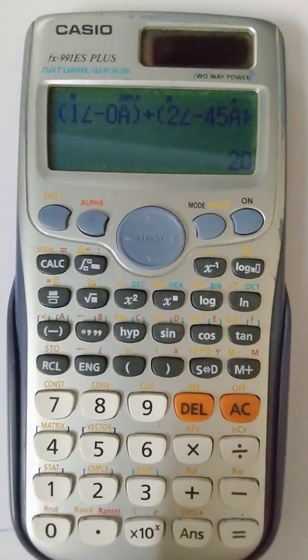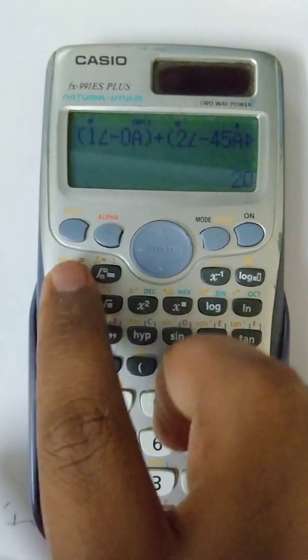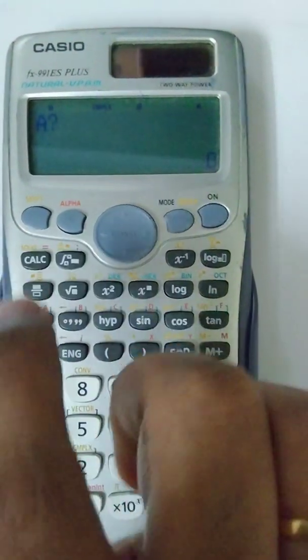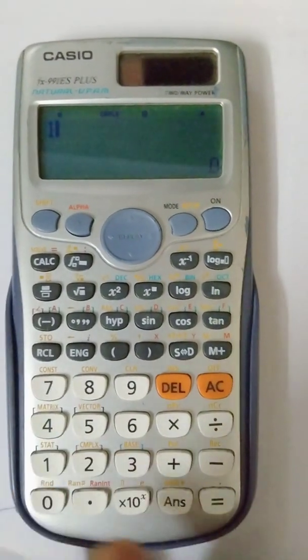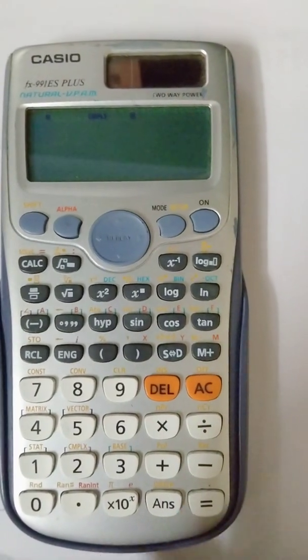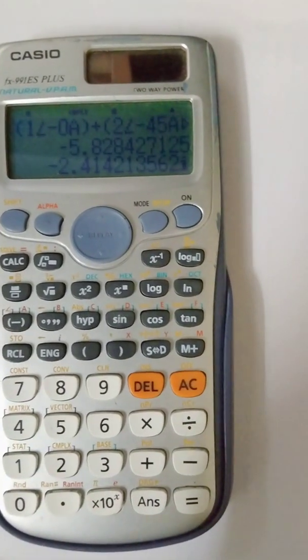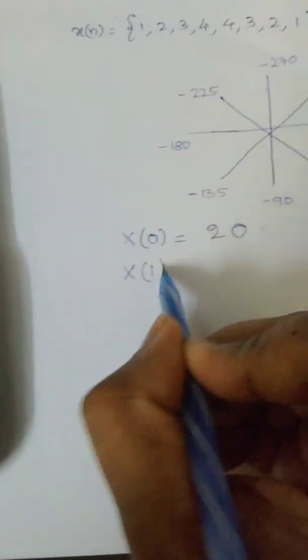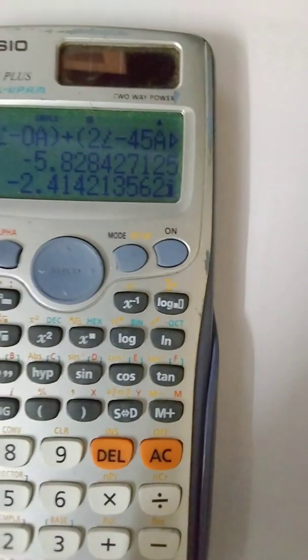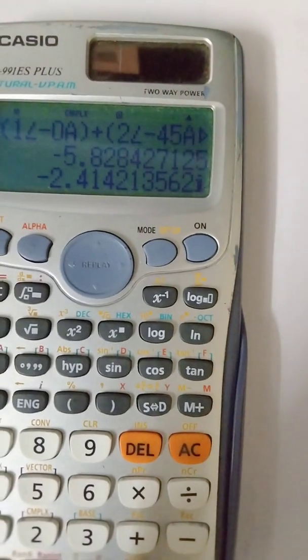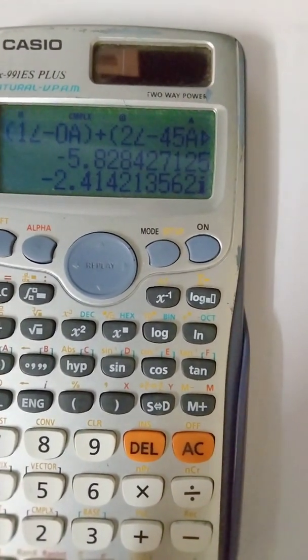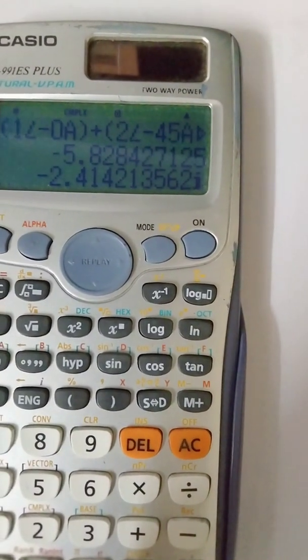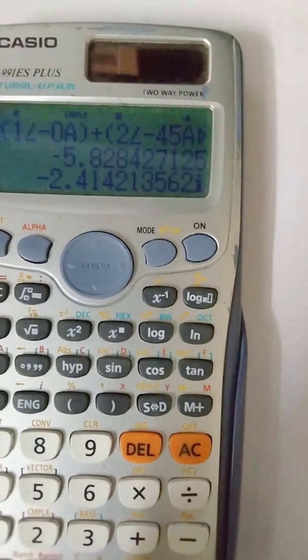And similarly, in order to know the value of 1, once again press on CALC and then press X of 1, which will be equal to - here you could get that result as X of 1 is equal to minus 5.828 minus 2.414j.